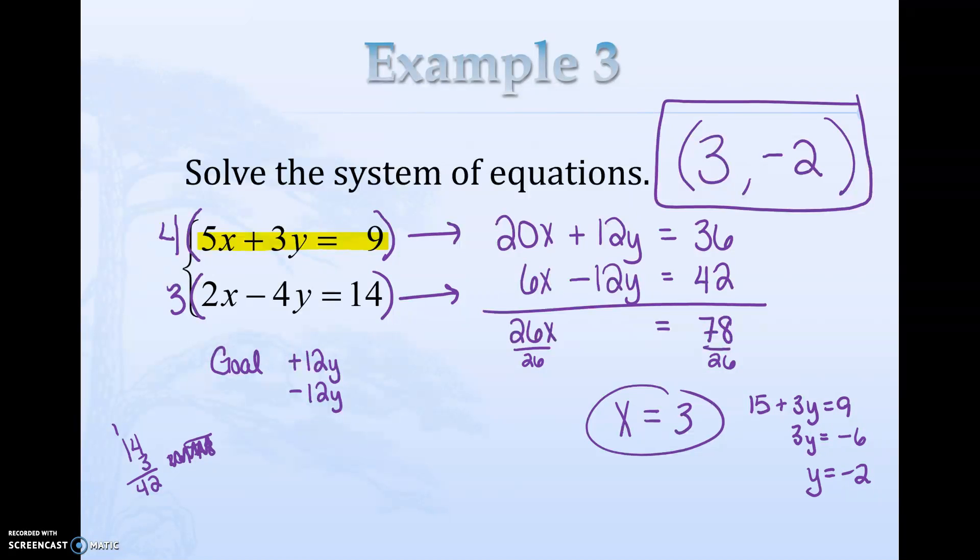One more thing. If you're doing this and all of your variables eliminate, remember, if you end up with a true statement like 0 equals 0, then it's all like multiple, many solutions. If you end up with a false statement like 0 equals anything other than 0, then it would be no solutions.